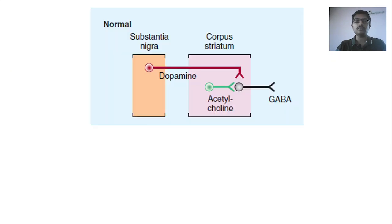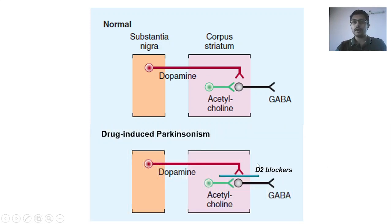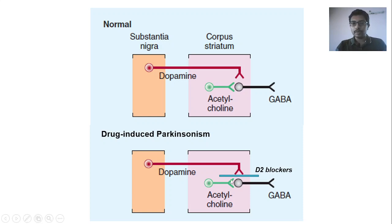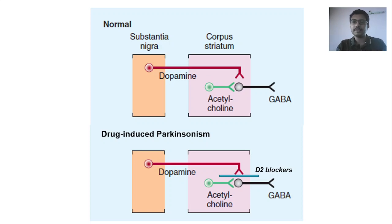Now let us look at drug-induced Parkinsonism. There are two switches — the nigrostriatal pathway and acetylcholine. In drug-induced Parkinsonism, certain drugs block the D2 receptors — they are D2 receptor blockers. These blockers block the receptors on which dopamine is supposed to act. The major difference is: in Parkinson's disease the level of dopamine is reduced, whereas in drug-induced Parkinsonism the level of dopamine is not reduced — it is normal. Because of D2 blockade, similar to Parkinson's disease, there is cholinergic overactivity. There is both dopaminergic underactivity and cholinergic overactivity, just like Parkinson's disease, but the mechanism is different. Here, dopamine levels are not altered. This is a very important difference.